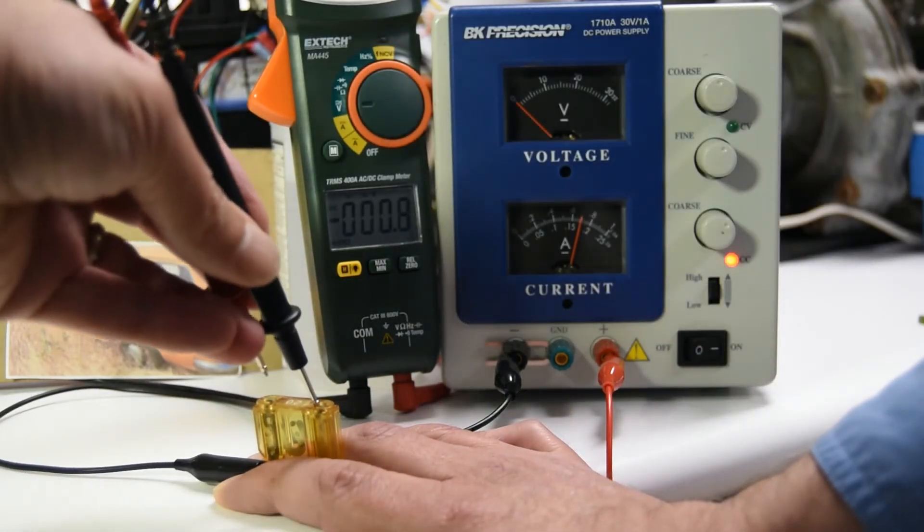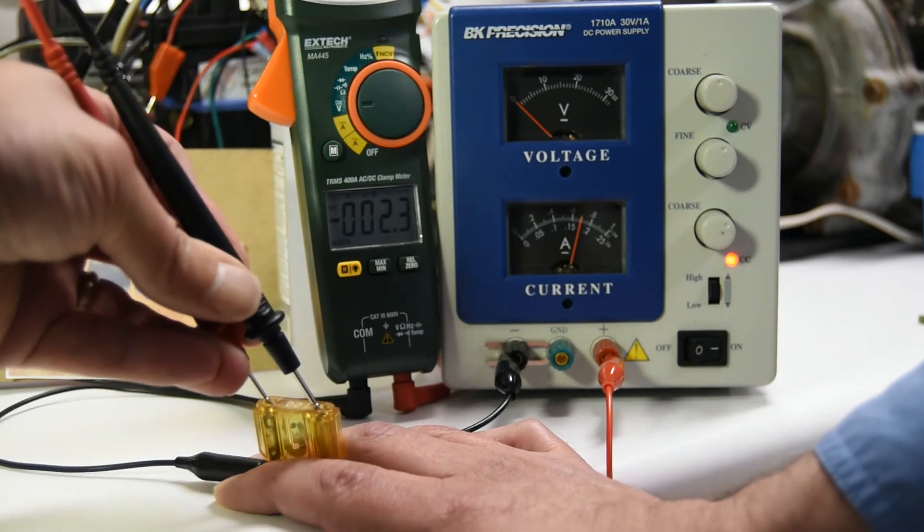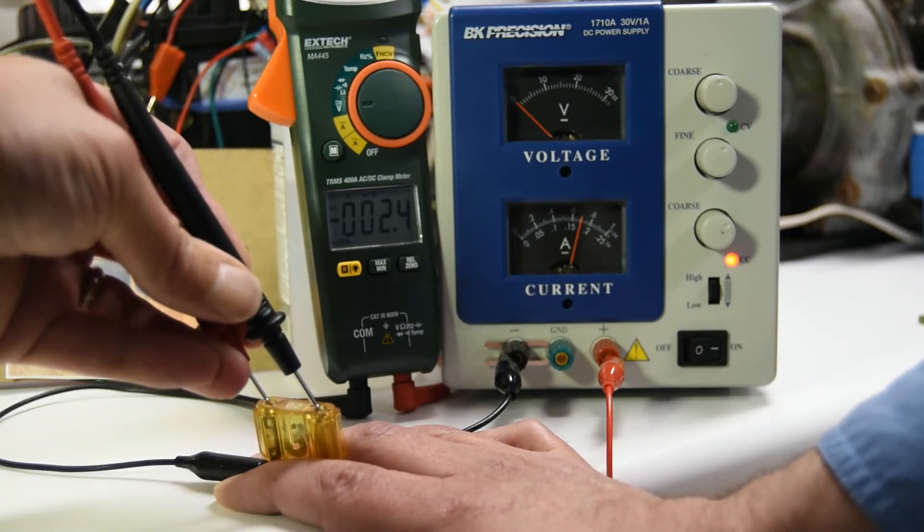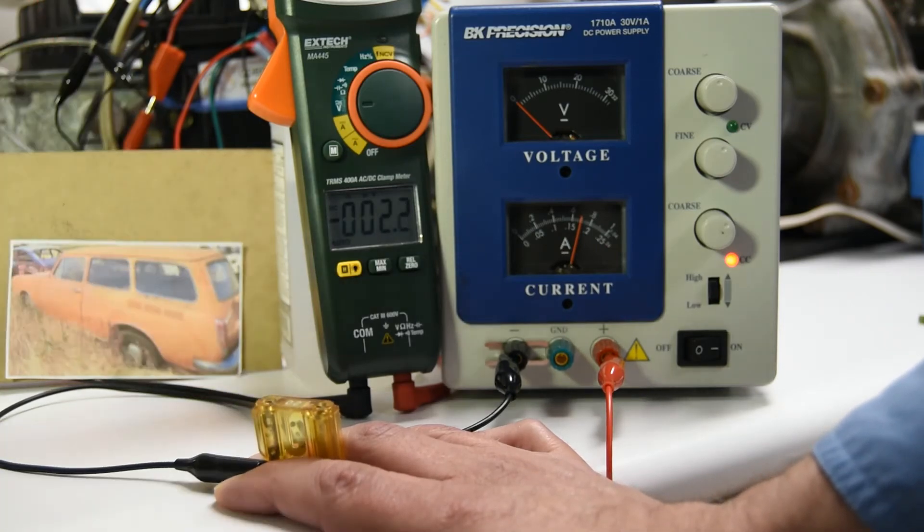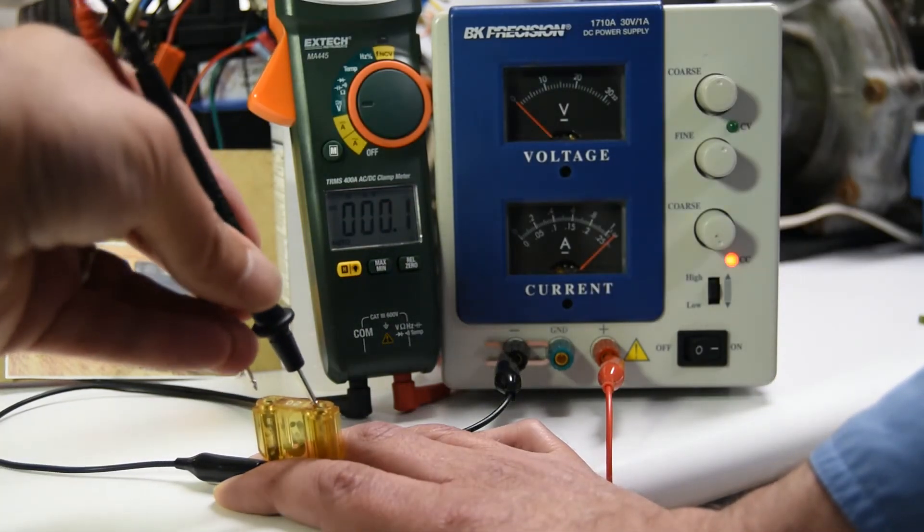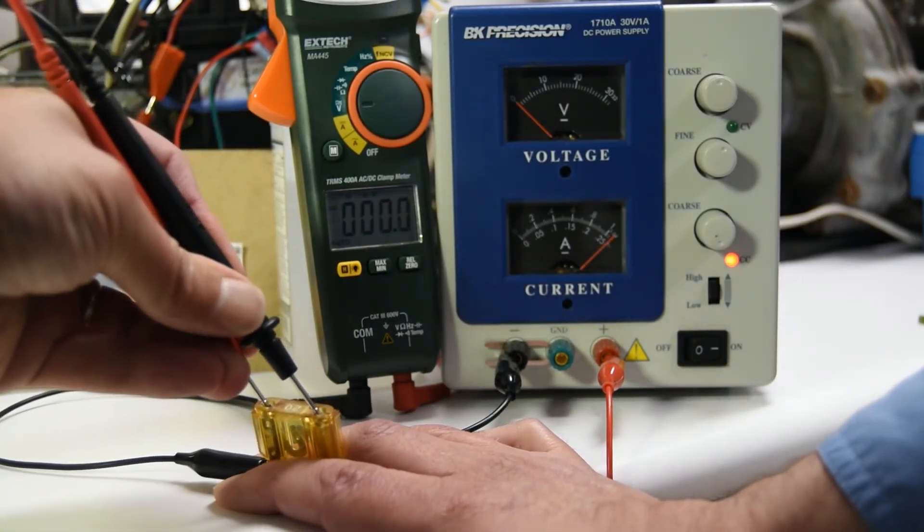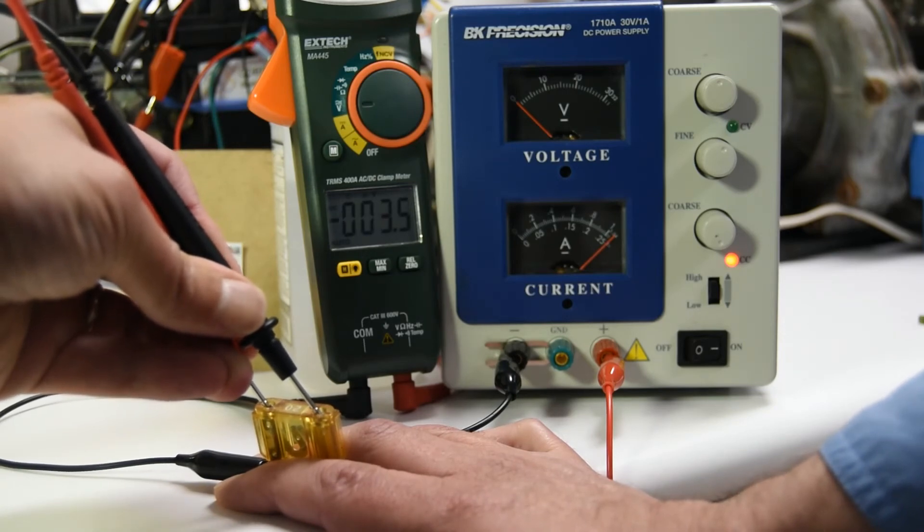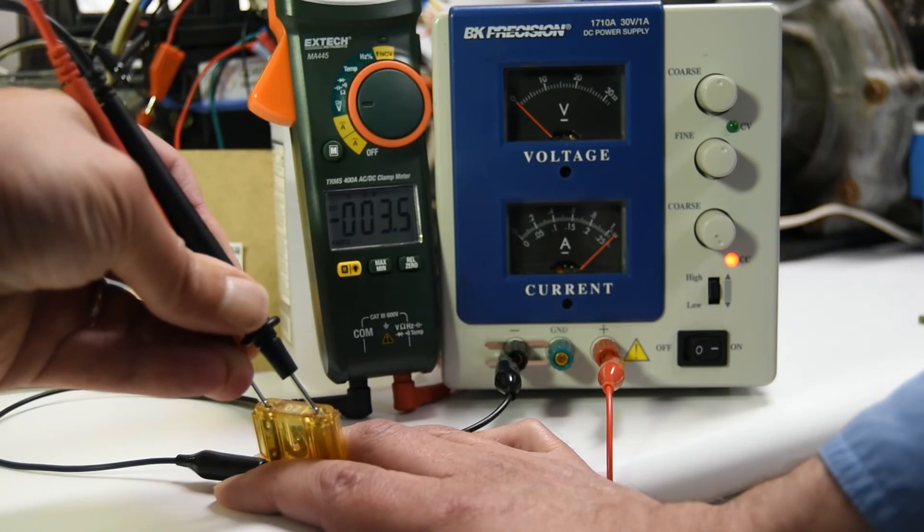So what we're showing here is that fuses with more current through them have more millivolts across the terminals. The higher the current, the higher the millivolt reading across the terminals. I'll just crank this up as far as I can go. And there we got 3.5.